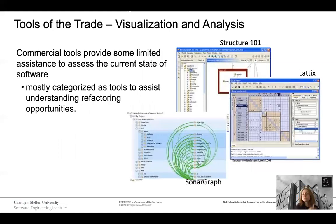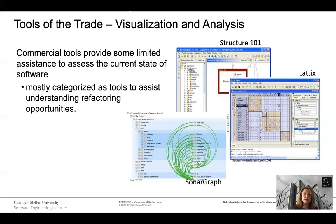If we step back and look at some of the tools of the trade, visualization and analysis is not uncommon in software engineering tool support. There are commercial tools that provide some limited assistance to assess the current state of software. Most of these tools are categorized as tools to assist understanding refactoring opportunities. For example, there are dependency analysis matrices that help you understand where the software might be tightly coupled, or graph structures that help you understand why the software might be coupled. While these tools are very helpful in navigating and browsing the software, they typically treat the software code as homogeneous without providing support in terms of where you might actually focus your refactoring efforts.